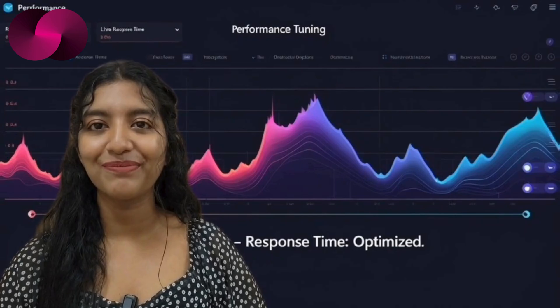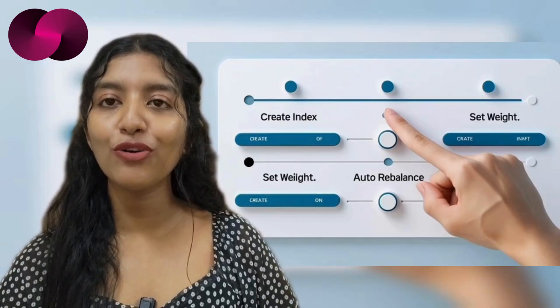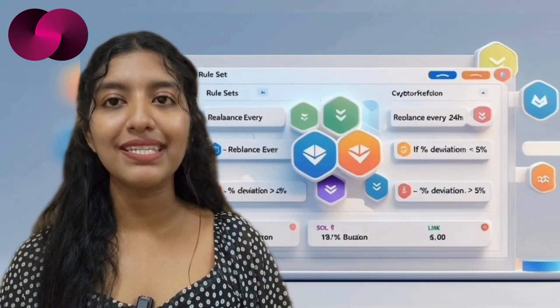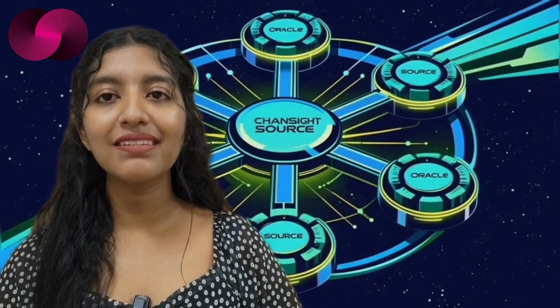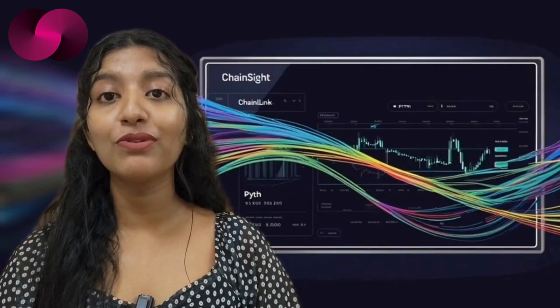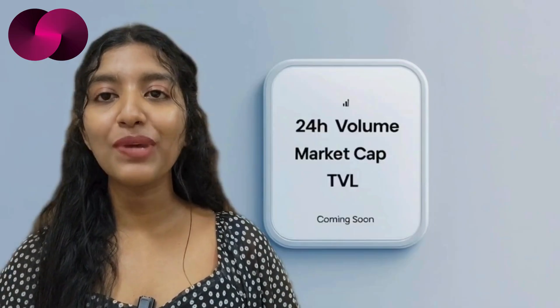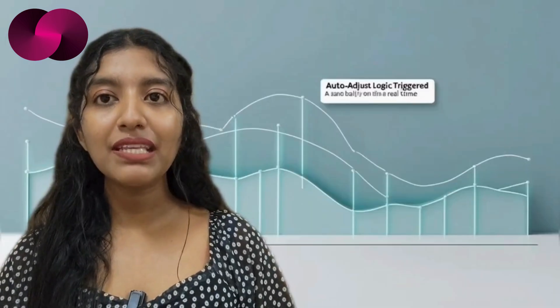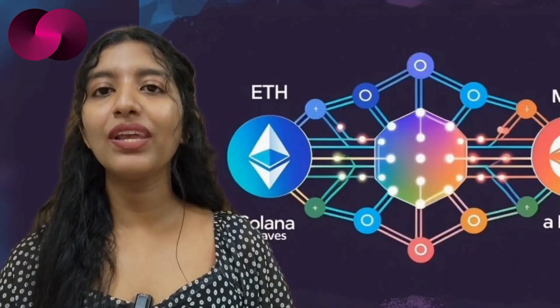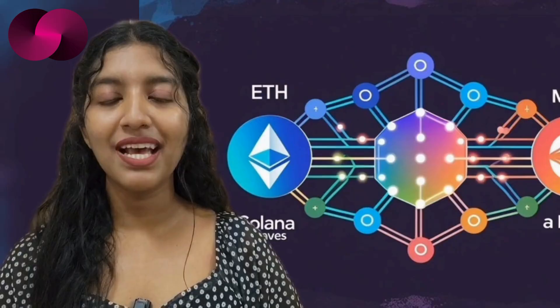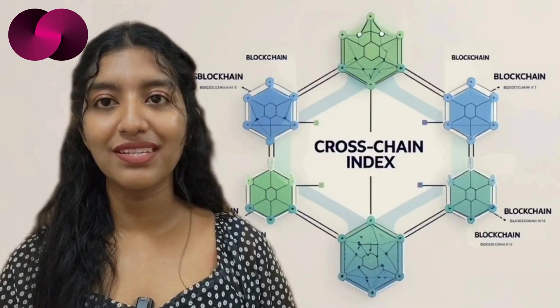Finally, ChainSite has rolled out a major upgrade to its infrastructure, designed to give users more control over how on-chain indices are created and managed. At the heart of it is a new index engine, which allows users to build custom index baskets, automate rebalancing rules, and publish everything directly on-chain for transparency. They've also expanded their oracle system — the updated multi-source oracle now pulls in data from sources like Chainlink and Pyth, with plans to include volume, market cap, and total value locked, so index logic can respond more accurately to shifting market conditions.